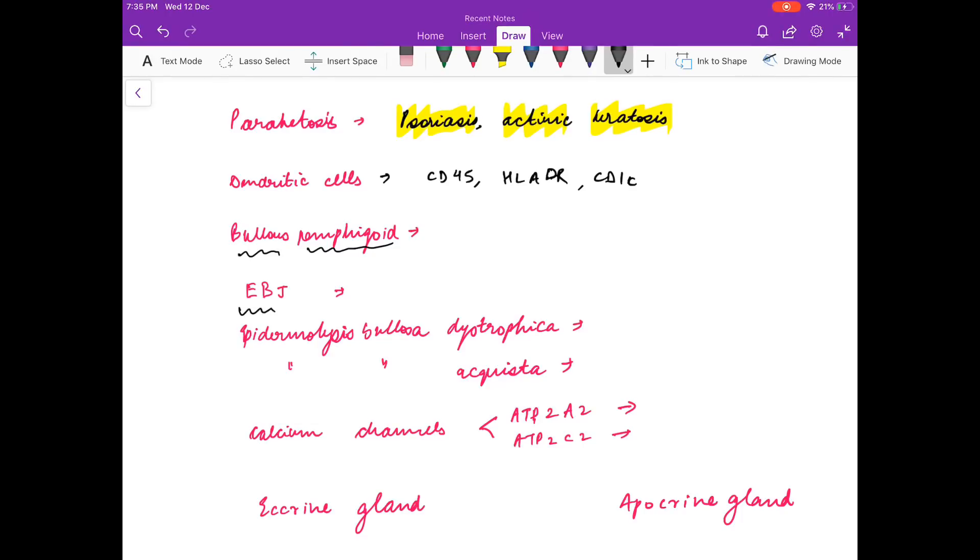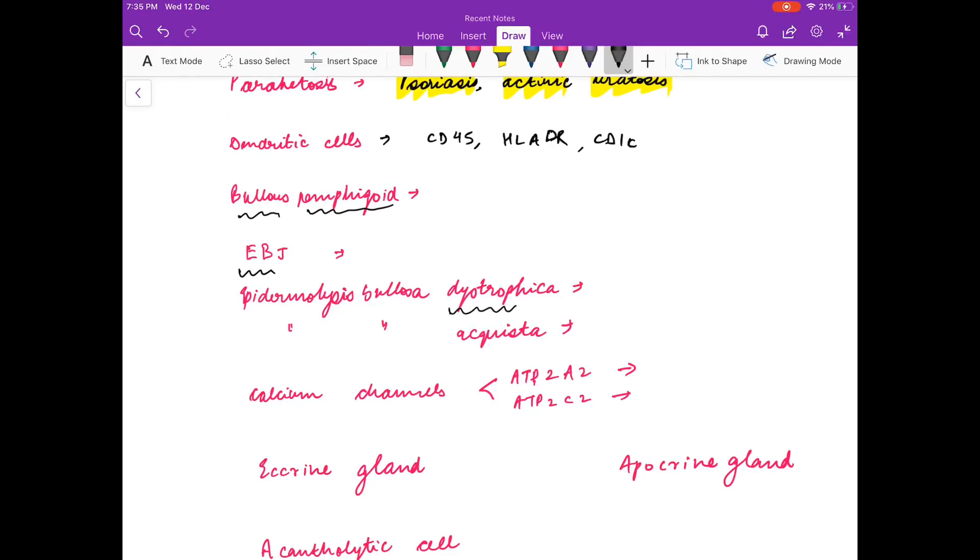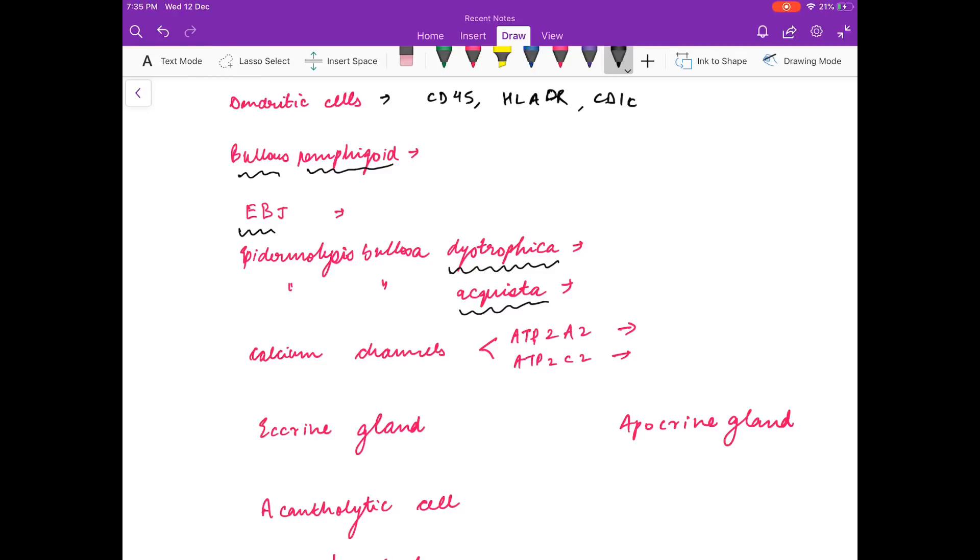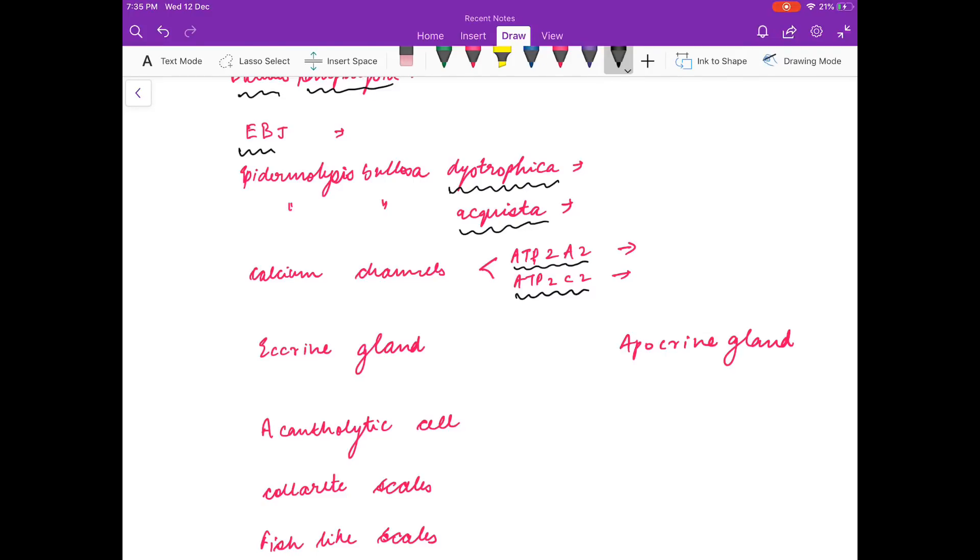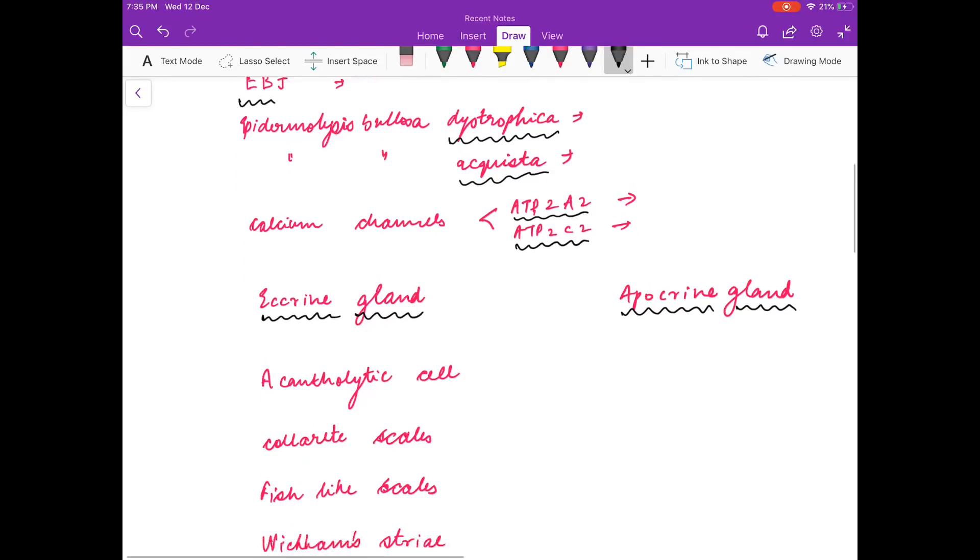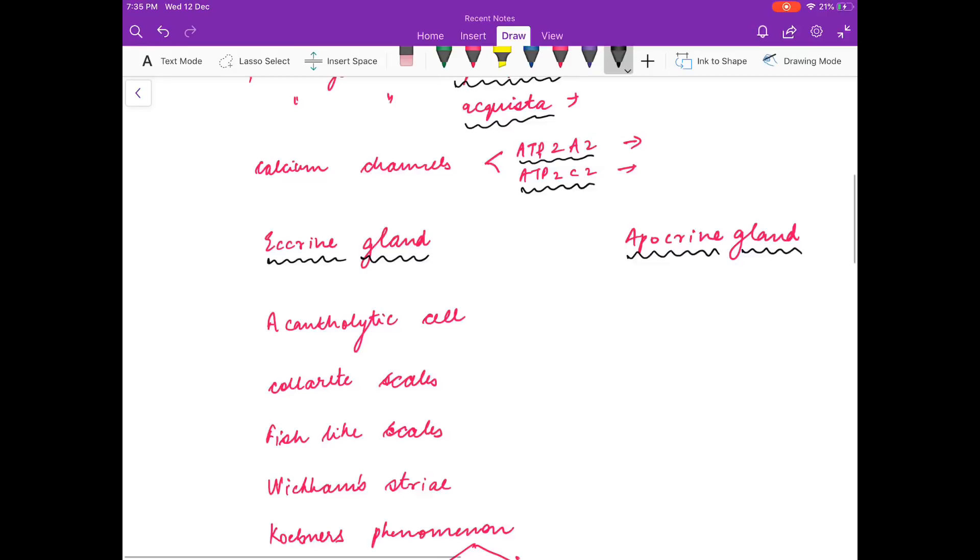What are the antibodies seen in bullous pemphigoid? Think the answer in your mind. What are the antibodies seen in epidermolysis bullosa junctionalis? Antibodies in epidermolysis bullosa dystrophica? Bullosa acquisita? What are the diseases that occur due to the mutation in ATP2A2 channels, calcium channels? ATP2C2 calcium channels? What are the disorders that occur in eccrine glands? In apocrine glands?